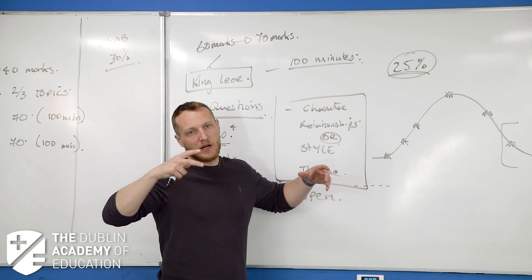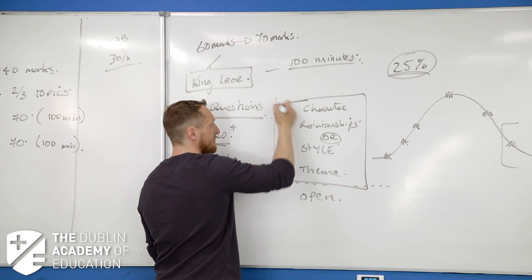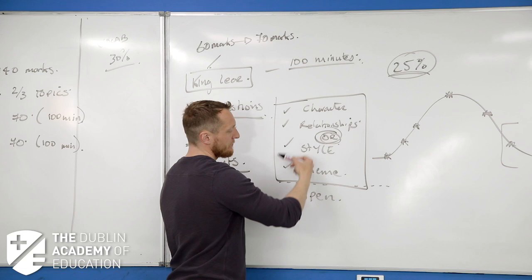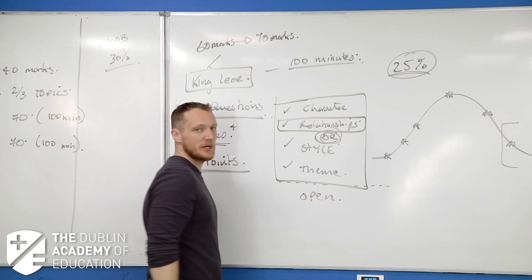There are only four types of question: character question, relationship question, style, and theme. They'll typically take one from here and one from here. What I would do is heavily double down on relationships at the minute.